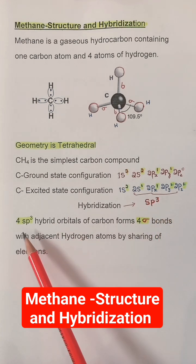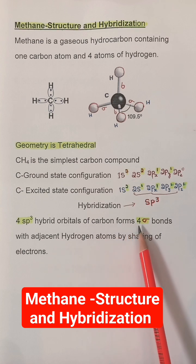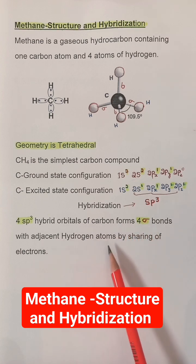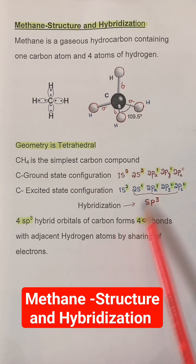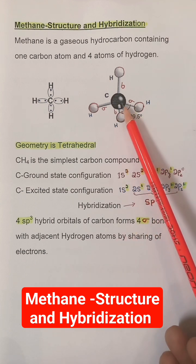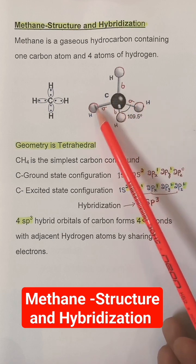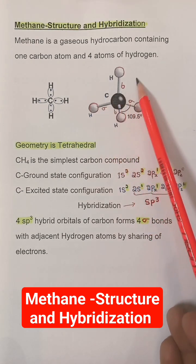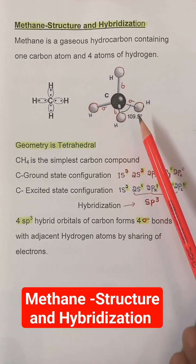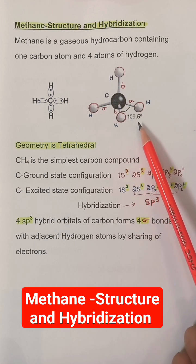Four sp3 hybrid orbitals of carbon form four sigma bonds with adjacent hydrogen atoms by sharing of electrons. Here we can see the carbon atom with four carbon-hydrogen sigma bonds and a bond angle of 109.5 degrees.